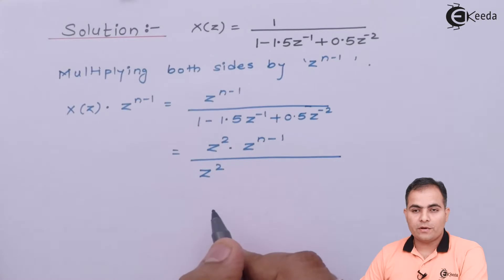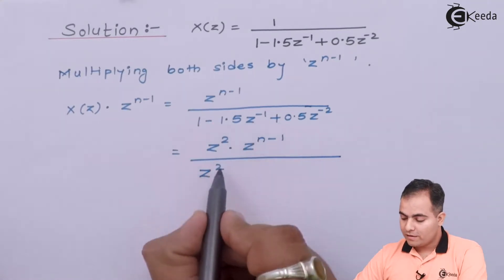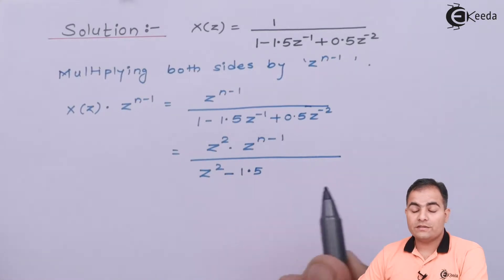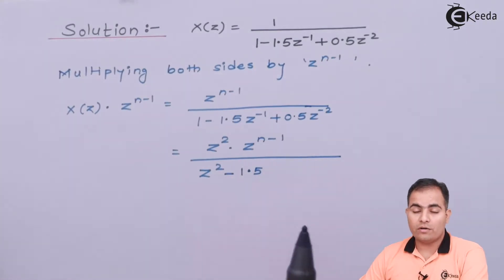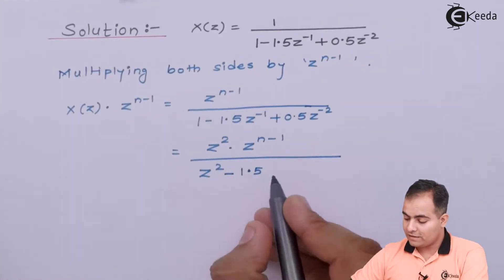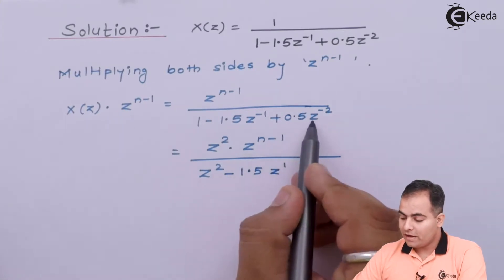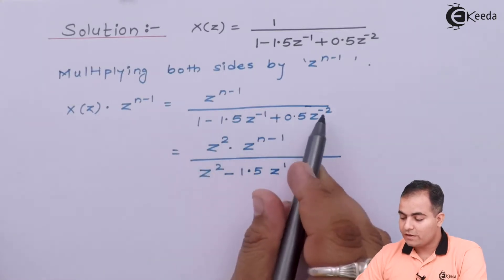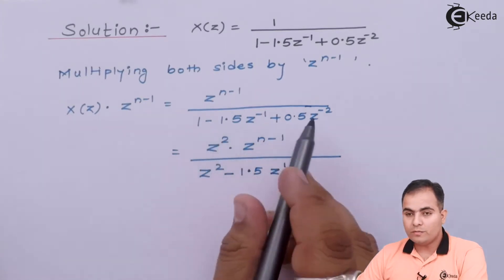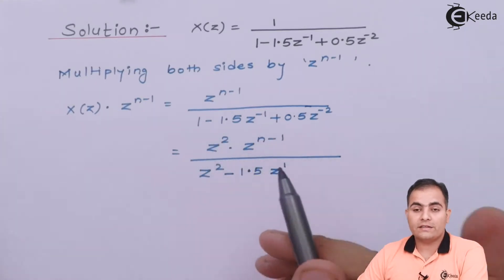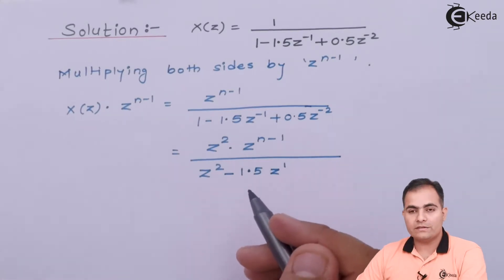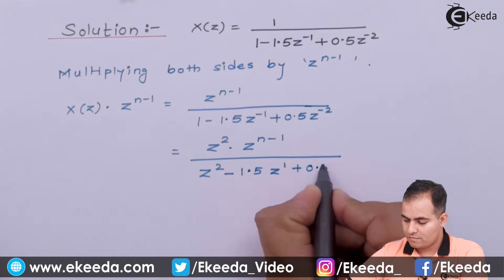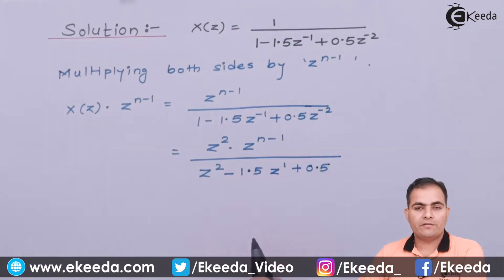After multiplying: 1·Z² becomes Z². For the middle term, since the bases are the same the exponents add, giving 2−1 = 1. For the last term, 2−2 = 0, so Z⁰ = 1, leaving us with just 0.5.